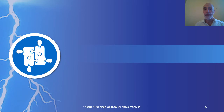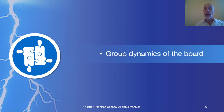External factors and company-specific factors certainly can be affecting both company performance and the board. However, perhaps the most complex and difficult issue that has to be dealt with is the group dynamics inside the board itself.